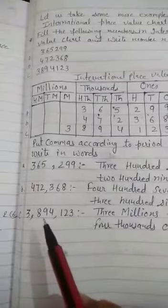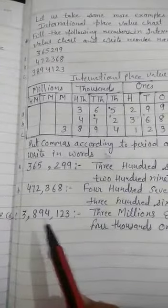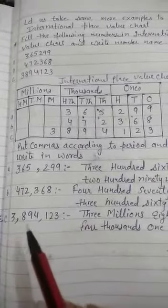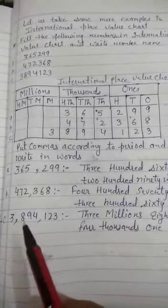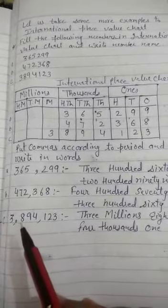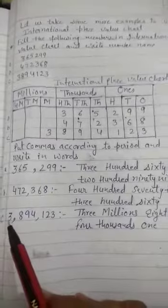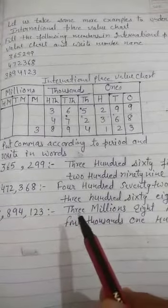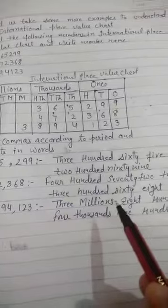Then next number, C part. 1, 2, 3 in ones period, put comma, 8, 9, 4 in 1000 period, we will put comma and 3 comes in million period. So, 3 millions, 894 thousands and 123.